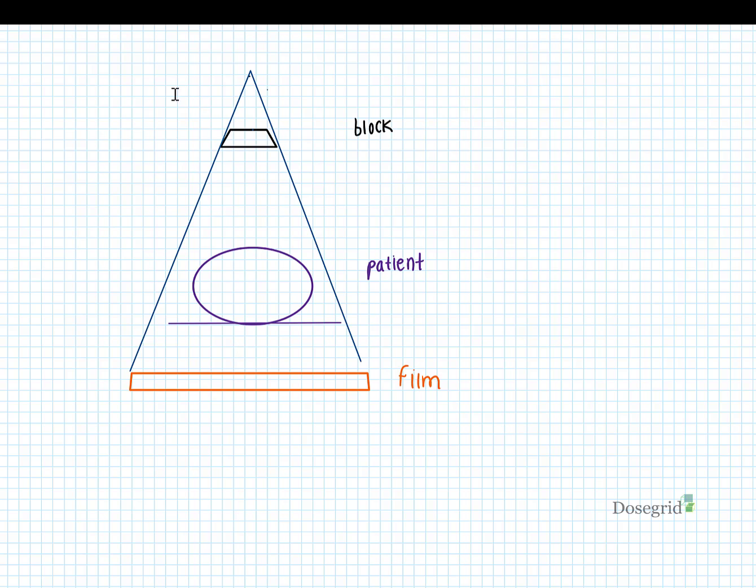Say on a port film, the rad onc realizes that 2 cm more of the spinal cord needs to be blocked. How do we adjust the blocking to accurately reflect the shift on the film? In modern therapy, things have changed.